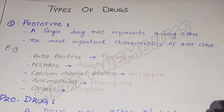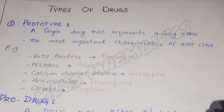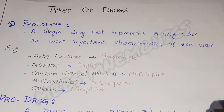What is a prototype drug? It's actually a single drug that represents a drug class or group and shows the most important characteristics of that class. To learn each fact about hundreds of different drugs is an impractical goal and is unnecessary in most cases. By classifying them into specific classes or groups, we can know the properties, mechanism of action, side effects, and contraindications of that class by just learning about a single drug that represents all the properties of all the drugs included in that class or group.